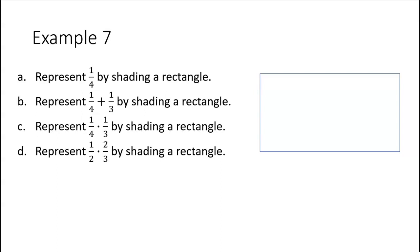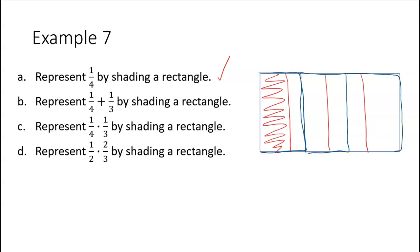So we're going to represent 1 fourth by shading a rectangle. All right, so if we want to represent 1 fourth, we need to break this into four parts. So I'm going to do vertical. They're not perfect, but so this would be 1 fourth.